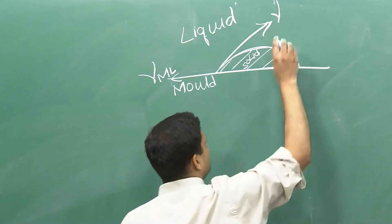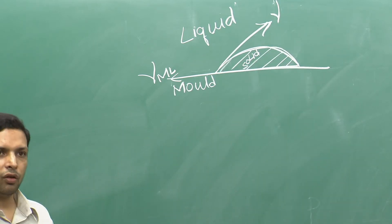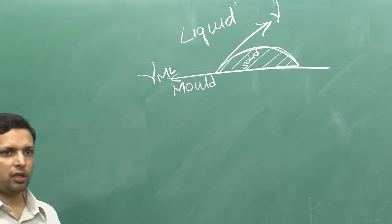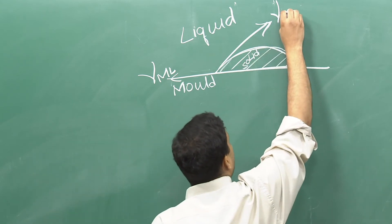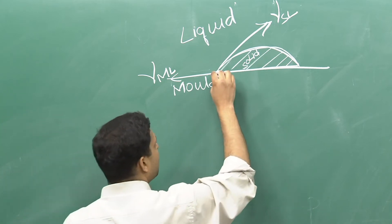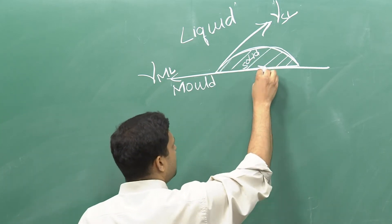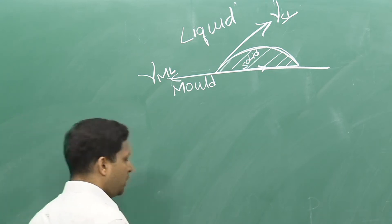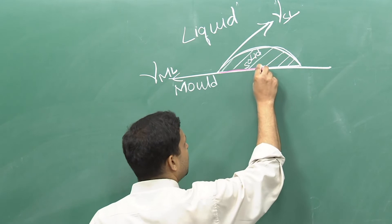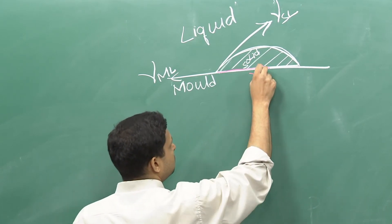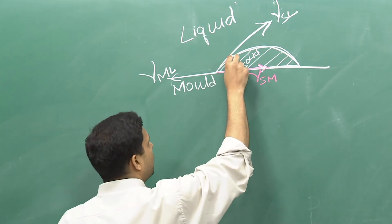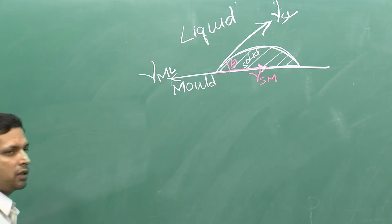The surface between solid and liquid is γ_SL, and between solid and mold is γ_SM, drawn in red. Remember that surface energy equals surface tension, which is a vector. There is an included contact angle θ at the triple junction where mold, liquid, and solid meet.